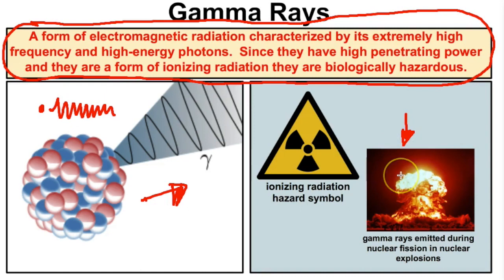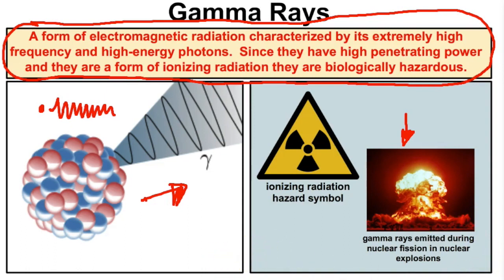So that's radioactive decay, radioactivity, and E equals mc squared in a nutshell. If you like what you see, go ahead and click that little button in the bottom right-hand corner to subscribe to my channel. Feel free to leave any comments or questions down in the comments section below, and I hope you guys found this helpful.